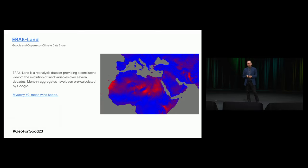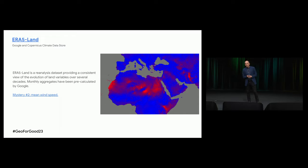ERA5-Land from Copernicus itself is not new — it's been in the engine for more than a year. The new thing we did this year is compute daily and monthly aggregates, either mean or sum depending on what makes sense, and we also added mean and max bands. That's why the attribution is Google and Copernicus. I showed wind speeds to demonstrate something new — they are pretty high in desert areas, especially the Sahara, though I'm not entirely sure why.